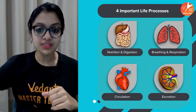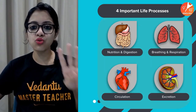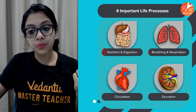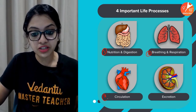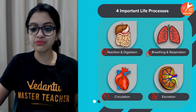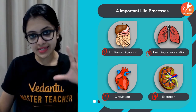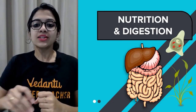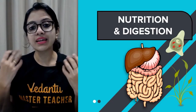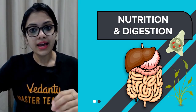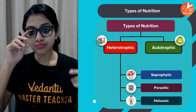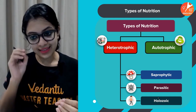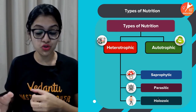In this chapter, there are four important life processes we talk about: nutrition and digestion is the first one, breathing and respiration is the second, circulation is the third, and excretion is the fourth. We discuss these processes in plants and in animals. So let us first get started with the revision of nutrition and digestion at a glance. There are two major modes of nutrition: autotrophic and heterotrophic.